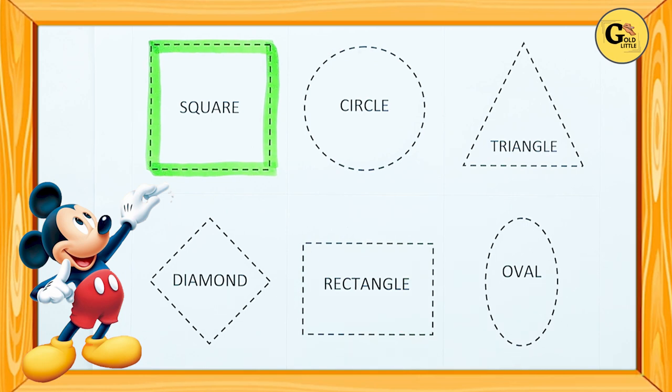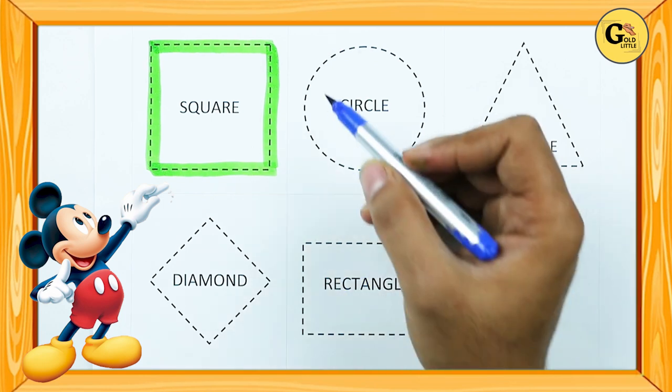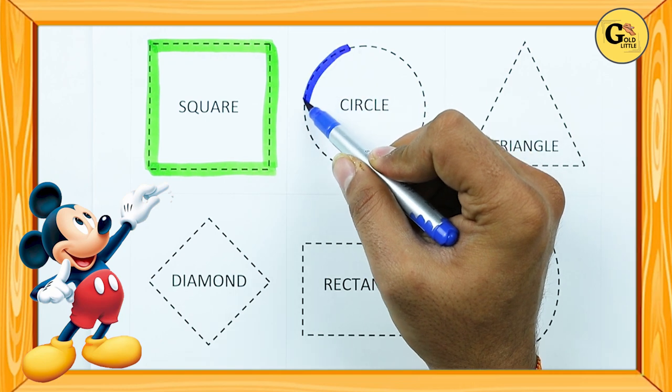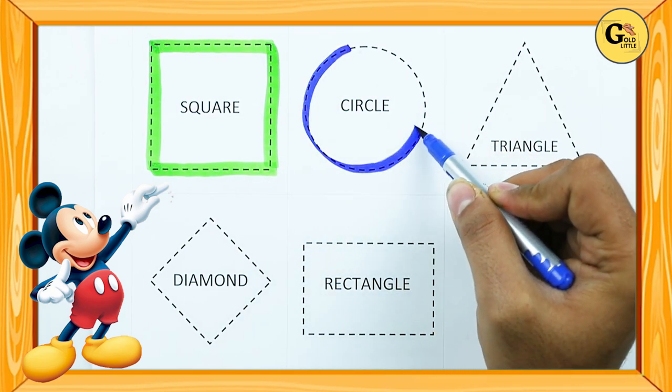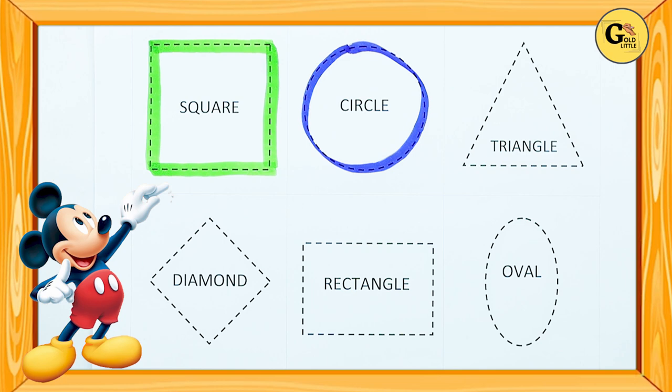It's called square with green color. Circle, round, round, round. It's a circle with blue color.